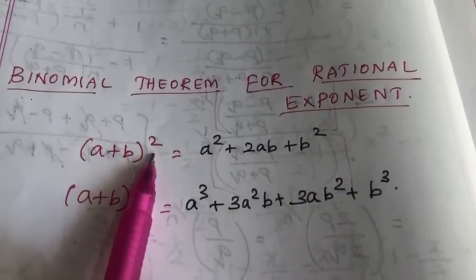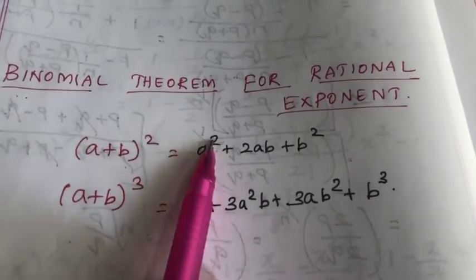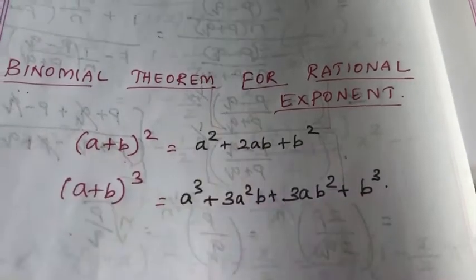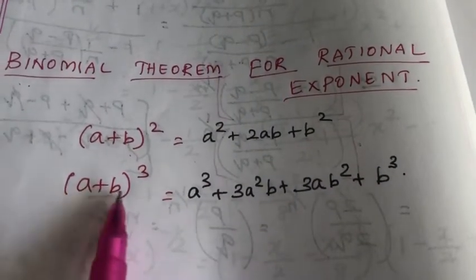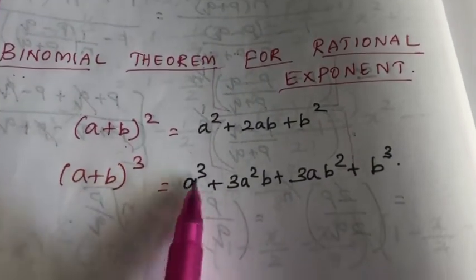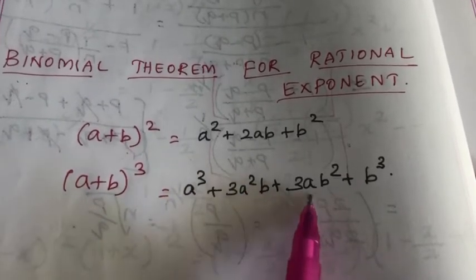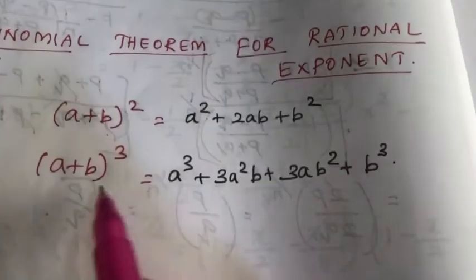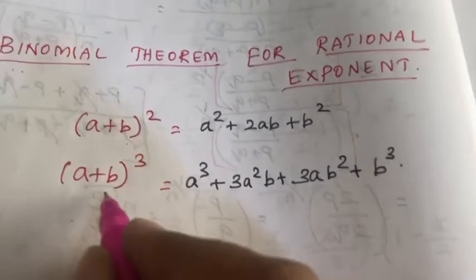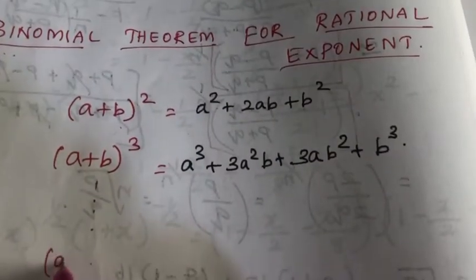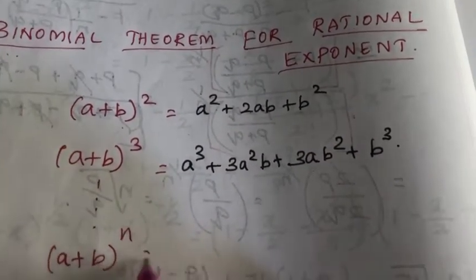For (a + b) whole square, the general expression is a² + 2ab + b². Similarly, for (a + b) whole cube, it is a³ + 3a²b + 3ab² + b³. Similarly, we can generalize the terms up to n terms such as (a + b) whole to the n.